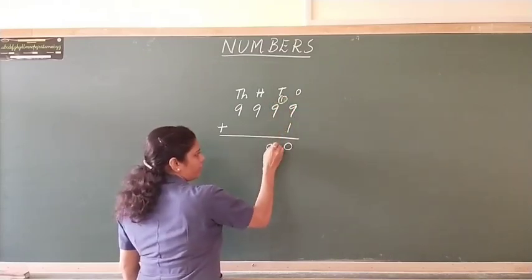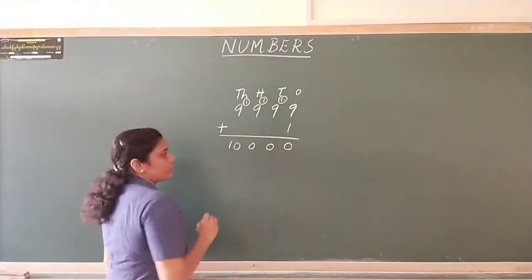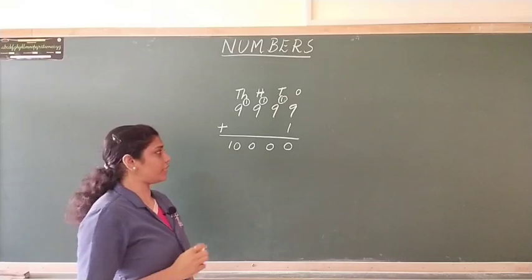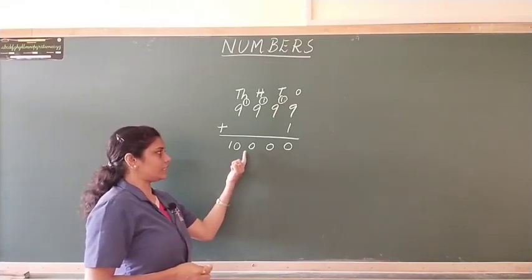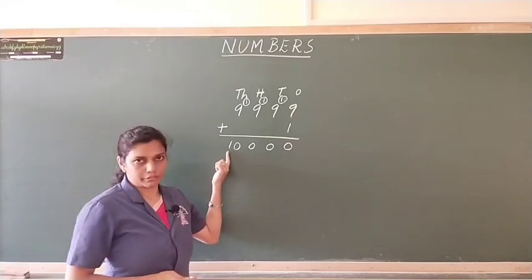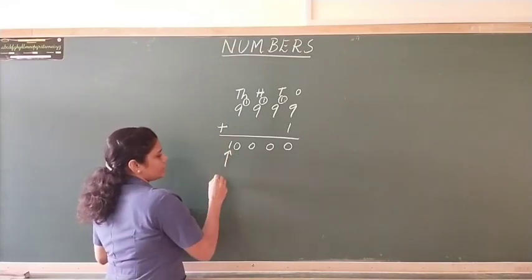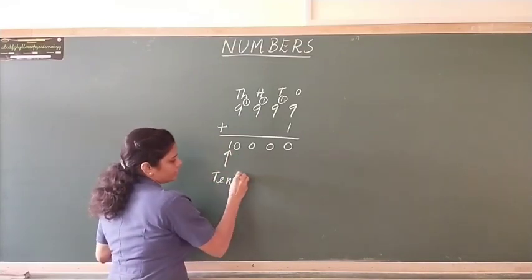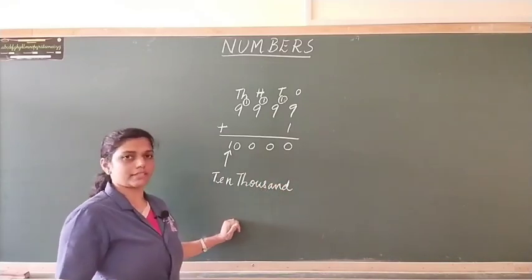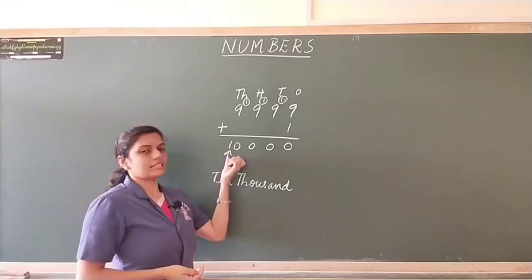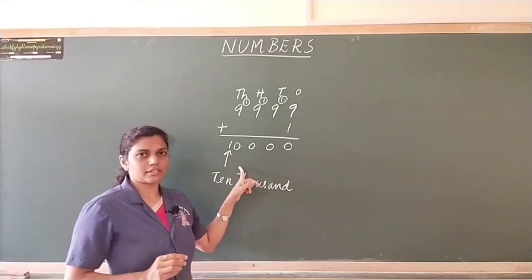So, if you have noticed, we have got a 5-digit number: 1, 2, 3, 4 and 5. So, what is this 5-digit number? 10,000. Also, this is the smallest 5-digit number.